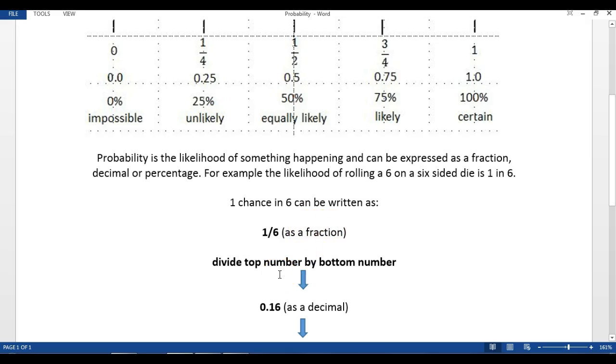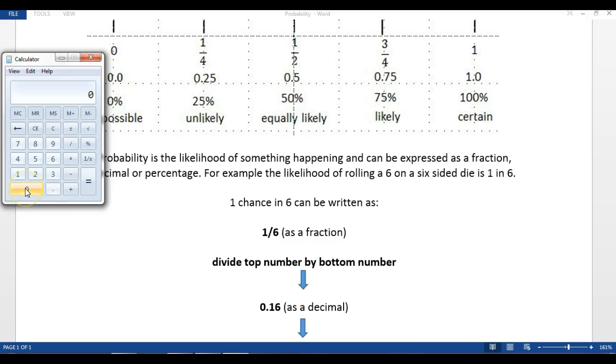If you then want to convert that into a decimal, you can divide the top number which is the one by the six. I can do that on the calculator here, so it's one divided by six and you can see you get 0.1 and a lot of sixes there. Usually you can just round that off to two decimal places so you can get 0.16 as that's written there.